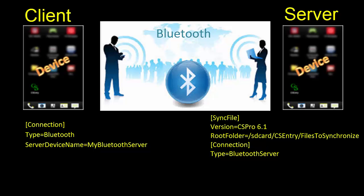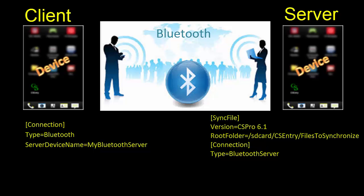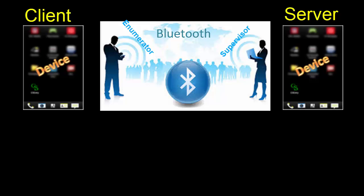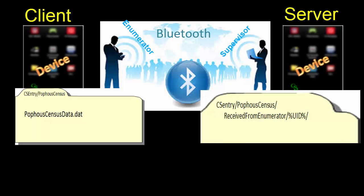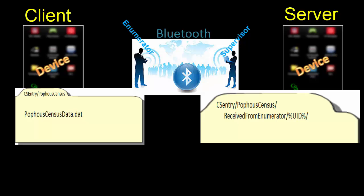The root folder line specifies the path on the tablet from which files are shared. That is, the path specified by the SetServerPath command is concatenated with the root folder to establish the full path on the server. For example, we want to use Bluetooth to copy data from the enumerator's tablet to the supervisor's tablet. On the enumerator's tablet, we have a data file POPHouseCensusData.dat in the CSEntry/POPHouseCensus folder. On the supervisor's tablet, we would like to place this file in the folder CSEntry/POPHouseCensus/ReceiptFromEnumerator/%UID%/.